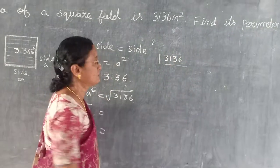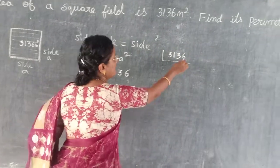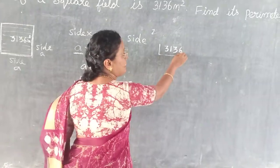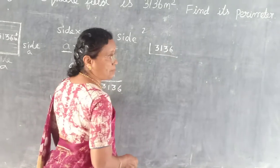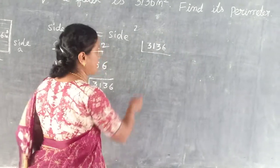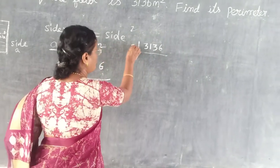3136. This is an even number, ending with 6. Which number do we take first? 2.